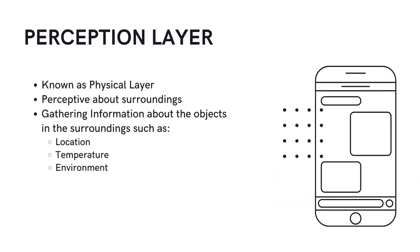The perception layer is also known as the physical layer. It uses sensors to detect objects in the surroundings and perceive information about them. However, the information gathered depends on the program that has been set based on the purpose of the device. For example, a temperature scanner uses sensors only for measuring the temperature of specific things such as a person or a room.